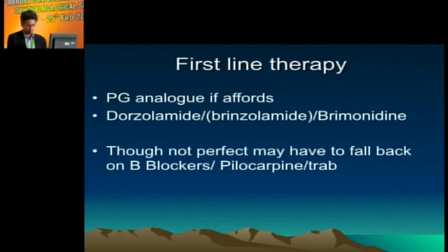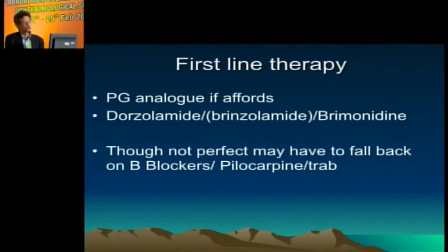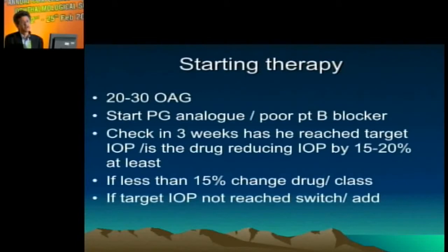The first medicine to start with is prostaglandin analogues, if the patient can afford them. You must understand the patient's financial situation because they will never say no but may not actually use the medicine. Much of India still uses beta blockers, and there is nothing wrong with that. In the normal tension glaucoma study, pilocarpine was the drug used — these are affordable drugs you can still use. Prostaglandins are preferred for once-daily dosing and maximum pressure lowering. If that is insufficient, add a beta blocker, dorzolamide, brinzolamide, or brimonidine. Once you are on two to three drugs, mention the possibility of future surgery, as multiple medications will likely not be administered properly.